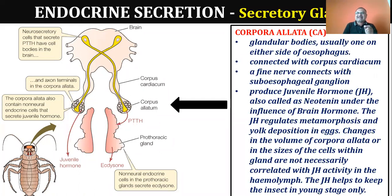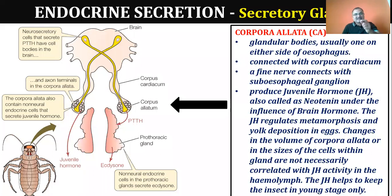Juvenile hormone is one important hormone. The first hormone we discussed is the brain hormone, released by the neuro-secretory cells. Brain hormone is also called prothoracicotropic hormone (PTTH). The brain hormone or PTTH secreted by the neuro-secretory cells is released into the corpora allata. The corpora allata also secretes a hormone called juvenile hormone, which is extremely important.